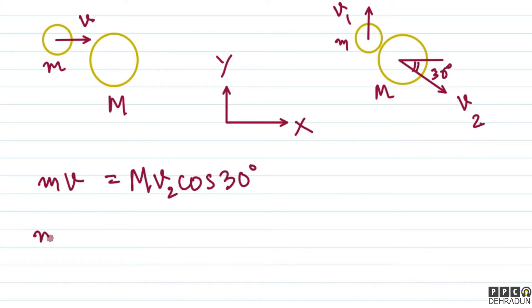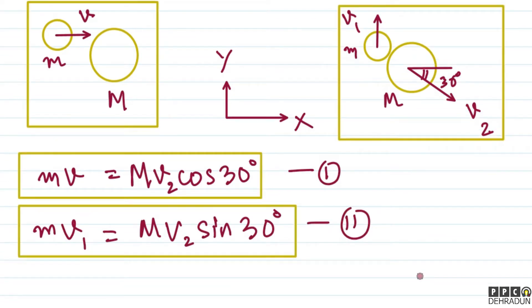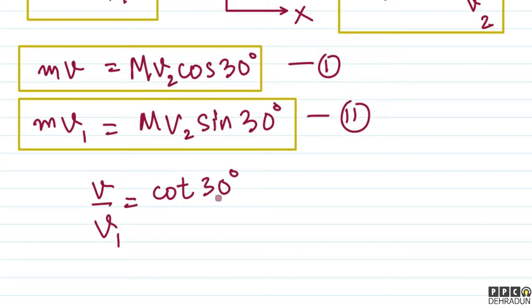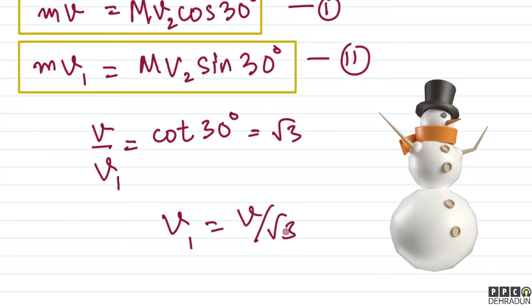So I can write: m into v1 has to be equal to capital M into v2 sine of 30 degrees. We now have two equations — equation 1 and equation 2. If we divide these two equations, we get v upon v1, which comes out to be cot of 30 degrees, whose value is root 3. So v1 equals v upon root 3.